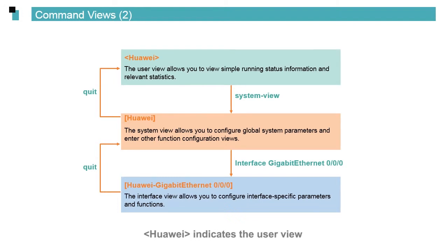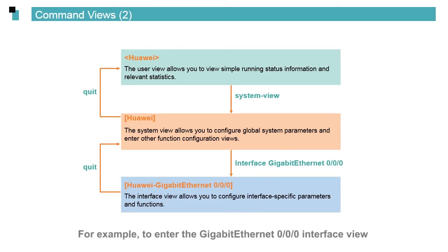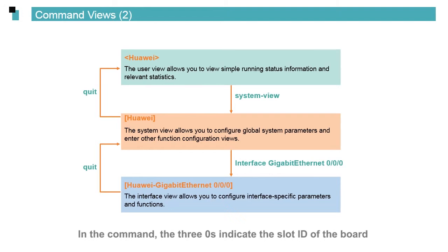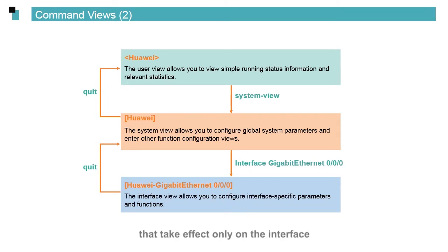The word Huawei in brackets indicates the user view, in which you can view simple running status information. Run the system-view command to enter the system view to configure global system parameters or enter other views. For example, to enter the GigabitEthernet 0/0/0 interface view from the system view, run the interface GigabitEthernet 0/0/0 command. The three zeros indicate the slot ID of the board, the ID of the subcard on the board, and the ID of the corresponding interface card, respectively. In this view, you can run commands that take effect only on the interface.